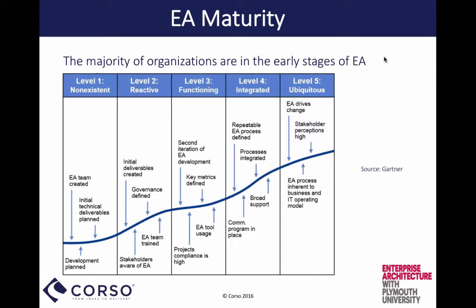Most organizations — not just universities — are at levels 1, 2, and 3. There are a few at levels 4 and 5, but they're getting there. Enterprise architecture is having a resurgence in the past 2 to 3 years. We went through a bit of the doldrums 5 to 10 years ago trying to prove its value, but we're now seeing the value come through, especially as people realize they need this to respond to the types of change in the digital world.